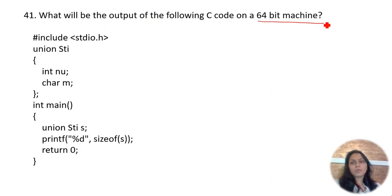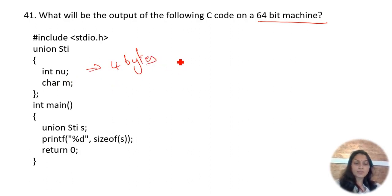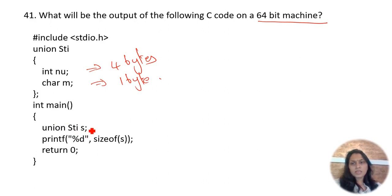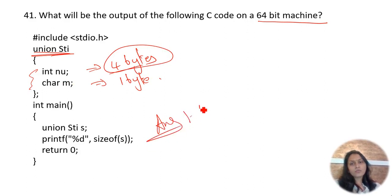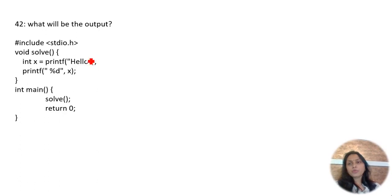What will be the output of the following C code on a 64-bit machine? On a 64-bit machine, int is 4 bytes, float is 4 bytes, and char is 1 byte. Here struct/union 's' is asked for size. Since it is a union, it always takes the largest size — 4 bytes. So the answer is 4.